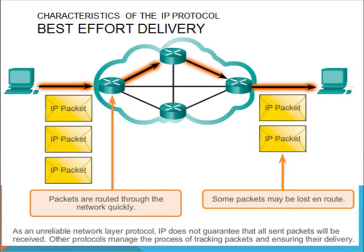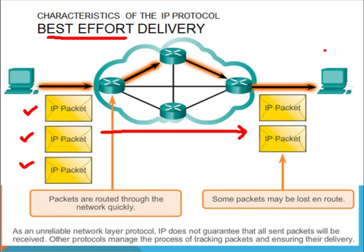Let's take a look at the characteristic of the IP protocol known as best effort delivery. Best effort delivery means that the IP protocol will try its best to send the packet from source to destination. Assuming you have three packets from the sender side — these three packets are sent through the network in different paths. The problem is the IP protocol may end up having some packets lost on the way, and these packets are not guaranteed. This management of tracking and ensuring delivery is handled by other protocols in different layers.